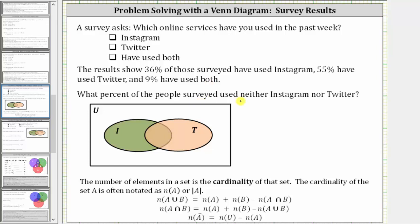What percent of people surveyed used neither Instagram nor Twitter? Let's organize the information in a Venn diagram as shown here, where set I represents the percent that have used Instagram and set T represents the percent that have used Twitter. Because we are told 9% have used both, the intersection of set I and set T must contain 9%. The intersection of set I and set T is this set here. This represents the percent of people that use both Instagram and Twitter, which we know is 9%.